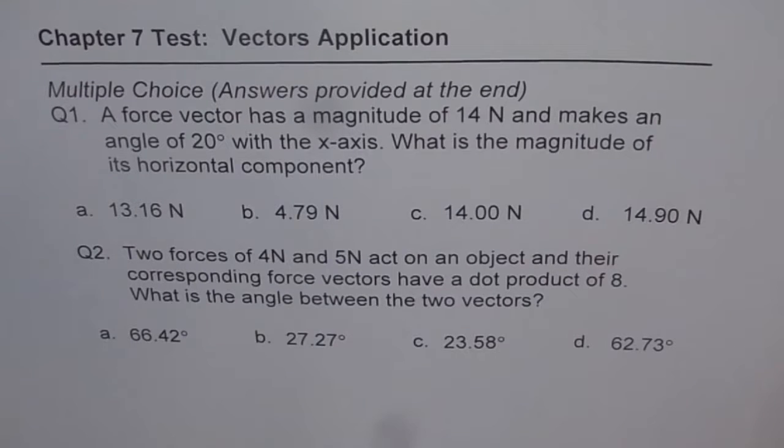So question number 1 here is, a force vector has a magnitude of 14 newton and makes an angle of 20 degrees with the x-axis. What is the magnitude of its horizontal component? And you are given four choices: 13.16 newtons, 4.79 newtons, 14.00 newtons or 14.90 newtons.